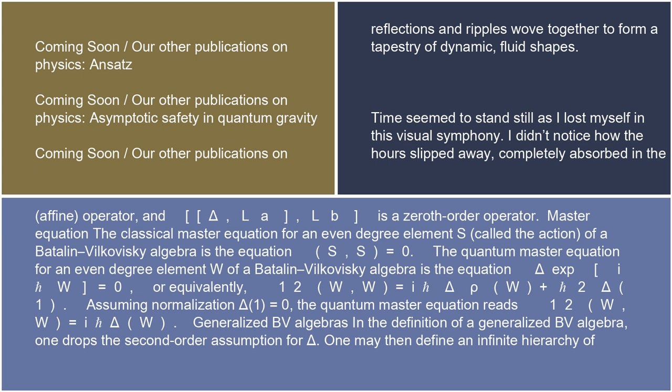The classical master equation for an even-degree element S — called the action — of a Batalin-Vilkovisky algebra is the equation {S, S} = 0. The quantum master equation for an even-degree element W is the equation delta(exp(W)) = 0, or equivalently, (1/2){W,W} = iℏ delta_rho(W) + 2·delta(1). Assuming normalization delta(1) = 0, the quantum master equation reads (1/2){W,W} = iℏ delta(W).